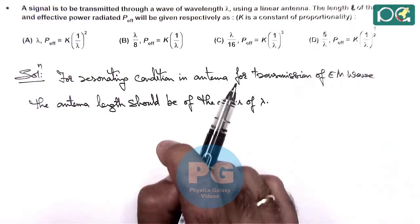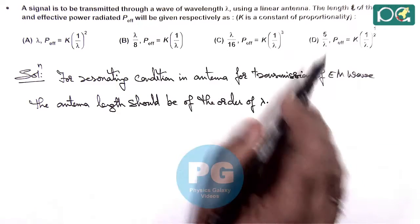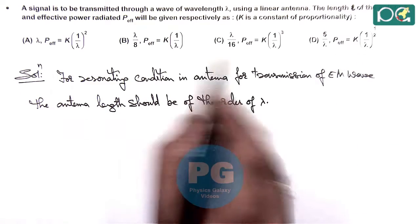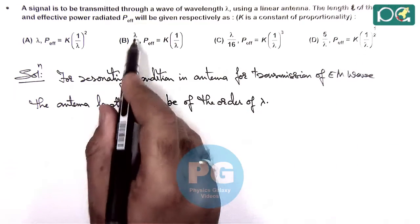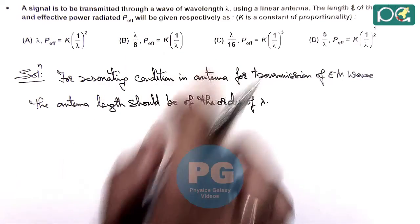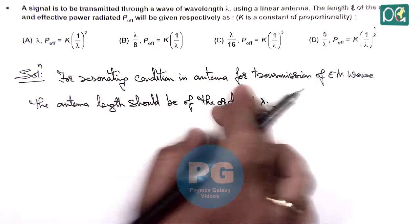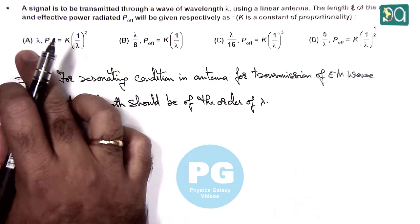This option D is dimensionally incorrect so we will discard it. And out of these three values obviously at lambda by 8 and lambda by 16 resonating condition won't happen. So here option A is the most appropriate one.